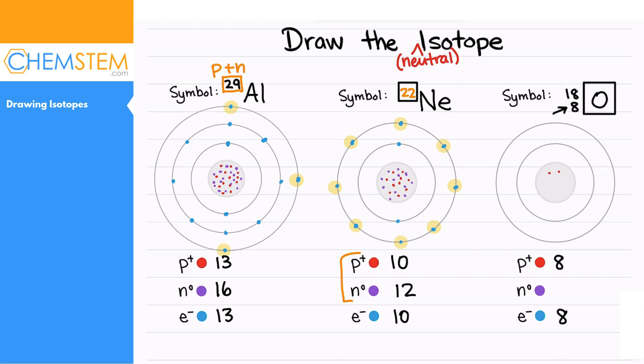So we can draw those 8 protons in: 1, 2, 3, 4, 5, 6, 7, 8. We have a mass number here of 18, so if we subtract 8 from 18 we determine that there are 10 neutrons. So let's draw those 10 neutrons in: 1, 2, 3, 4, 5, 6, 7, 8, 9, 10.